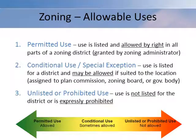For every zoning district, there are typically three types of uses: permitted uses, conditional uses, and prohibited uses. Permitted uses are uses that are listed and allowed by right in all parts of a zoning district. These are reviewed and granted by the zoning administrator.